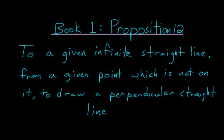Book one, proposition 12 of Euclid's Elements is a construction proof that focuses on perpendicular lines. To a given infinite straight line from a given point which is not on it, to draw a perpendicular straight line.